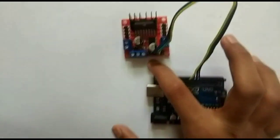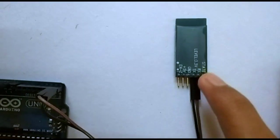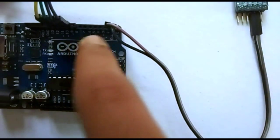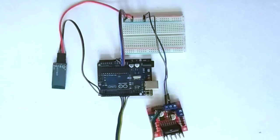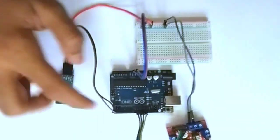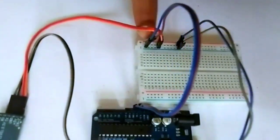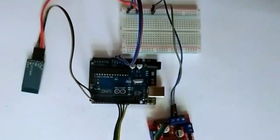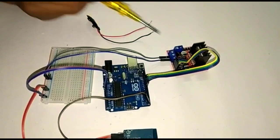Connect the inputs 1, 2, 3 and 4. Connect the Rx of the Bluetooth module to the Tx of the Arduino. Connect the Tx of the Bluetooth module to the Rx of the Arduino. Connect the 5V and GND of the Bluetooth module, Arduino and motor driver to the breadboard. Connect the positive terminal of the battery holder to the 12V and the negative terminal to the GND.